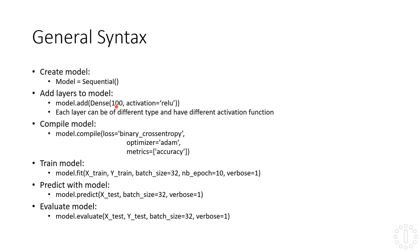We also specify how many neurons we want to have in this layer and which activation function we want to use. Another advantage of Keras is that each layer can have a different activation function, and we can have different types of layers. Here we don't have to use a dense layer — we could, for example, use a recurrent layer or a convolutional layer, and so on.